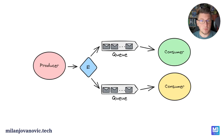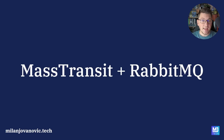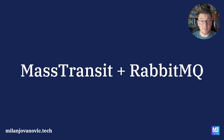RabbitMQ has multiple types of exchanges which determine how the message will be routed. There is a direct exchange, a fanout exchange, a topic exchange, and a header exchange. I'm going to explain how they work in the practical part of this video. Now let's take a look at how we can connect the MassTransit messaging library with RabbitMQ.